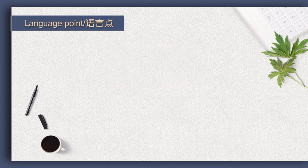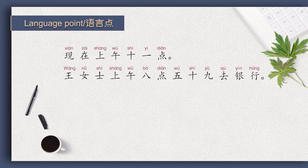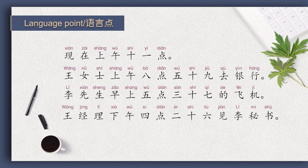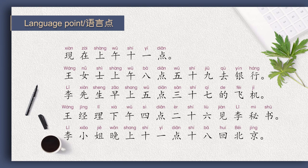Now please read with me. 现在上午十一点。 王女士上午八点五十九去银行。 李先生早上五点三十七的飞机。 王经理下午四点二十六见李秘书。 李小姐晚上十一点十八回北京。